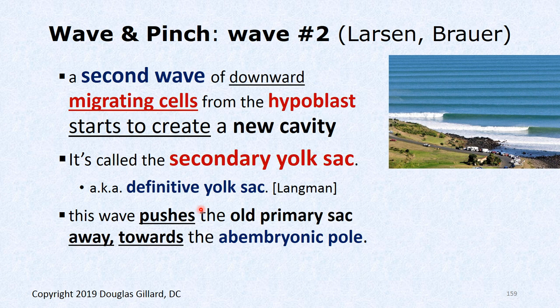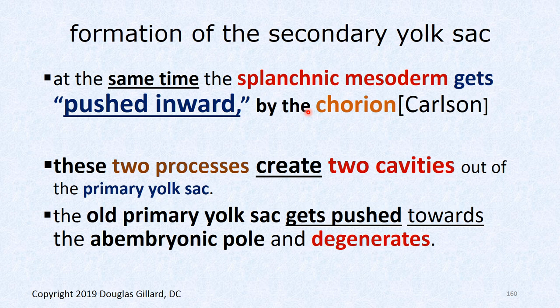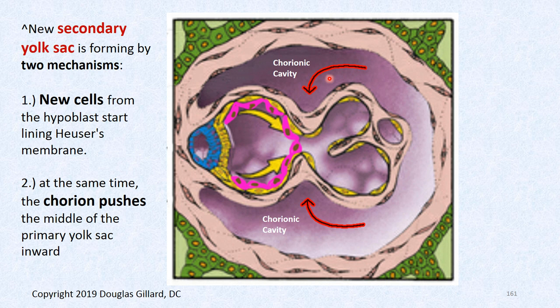This new wave of cells pushes the old primary yolk sac away toward the abembryonic pole. It's a double process: as new cells come down, the growing chorionic cavity also pushes inward at the center of the primary yolk sac, pinching it off. These two processes together — new cells coming down plus the pinching — create a new cavity called the secondary yolk sac.